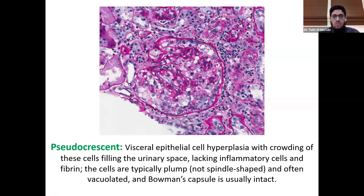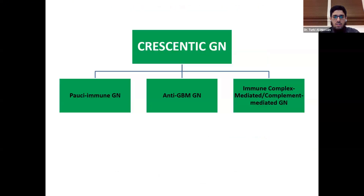The clinical presentation will be different as well. In cases of collapsing FSGS, patients will present with nephrotic-range proteinuria. However, in true crescentic disease, patients will present with RPGN with active urinary sediment.